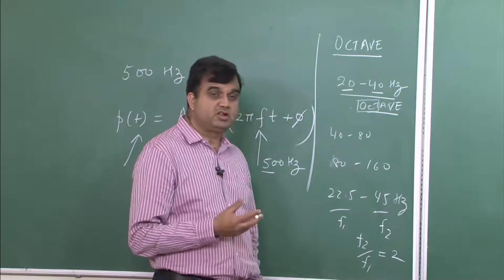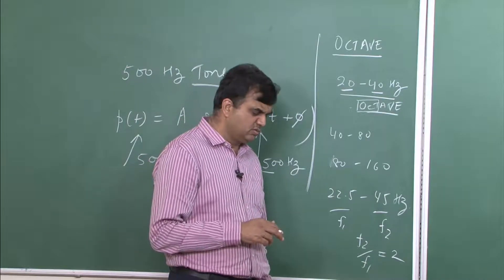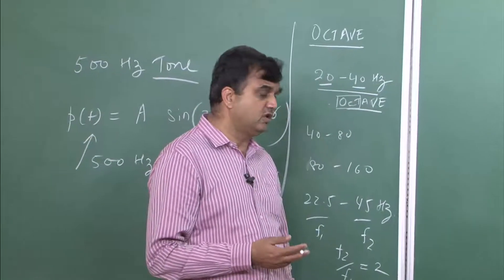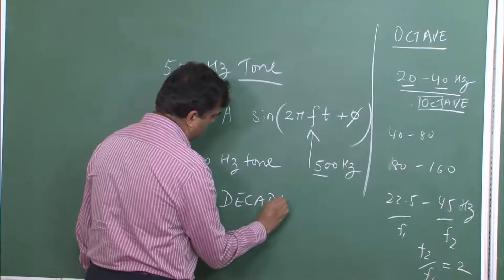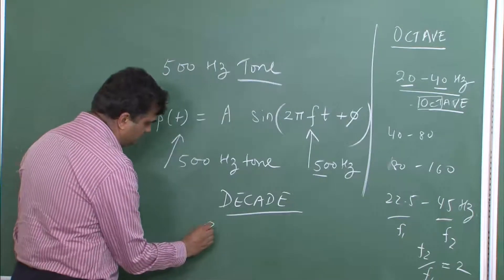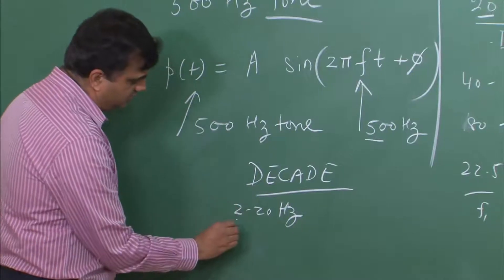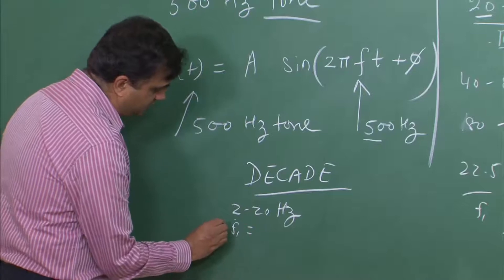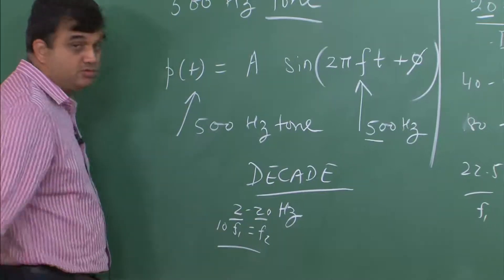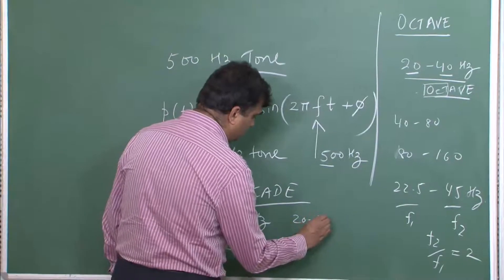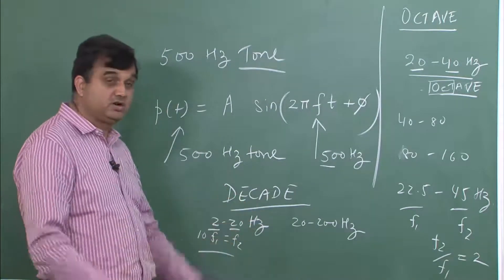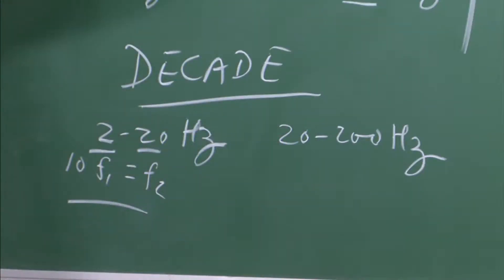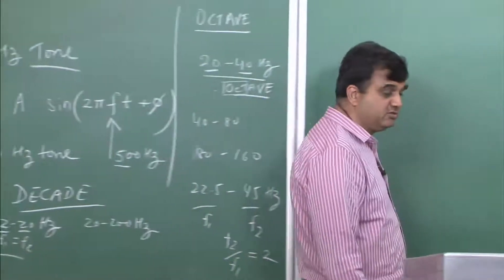This terminology is used for some historic reasons, but once the SI system came into picture, people also introduced a term known as a decade. Some examples of a decade: 2 to 20 hertz — where F2 equals 10 times F1 — is a decade. Another example: 20 to 200 hertz is again a decade. So all the frequencies lying between 20 to 200 hertz belong to the 20 to 200 hertz decade. In case of an octave, the ratio of upper to lower frequency limit is 2; in case of a decade, the ratio is 10.